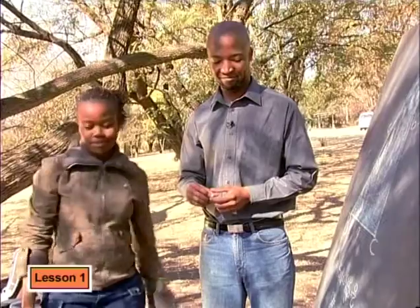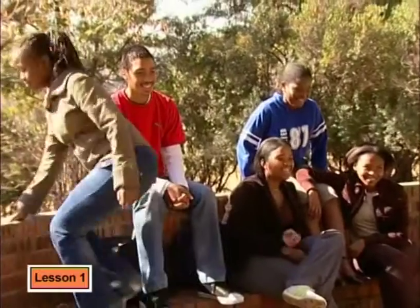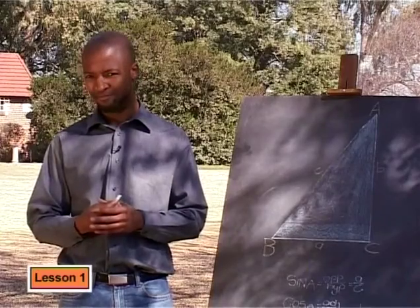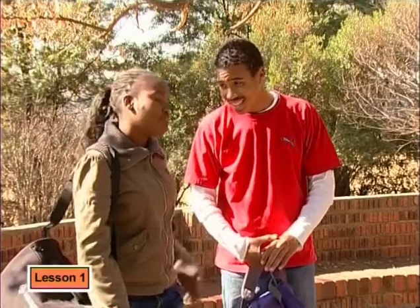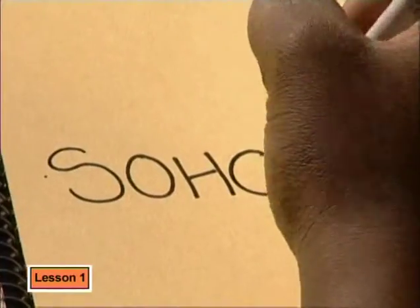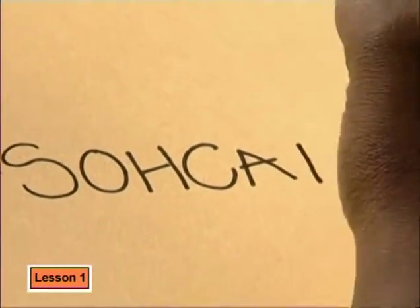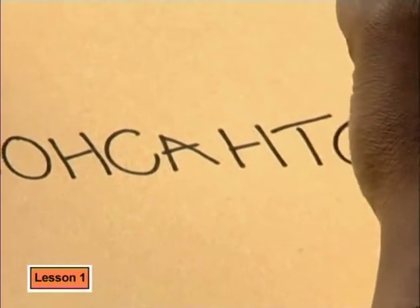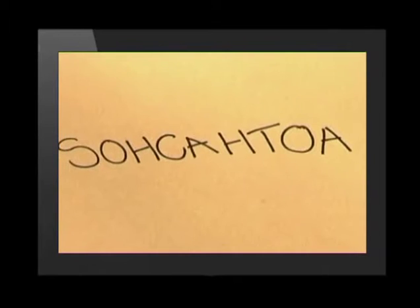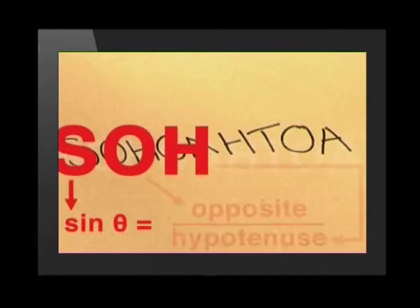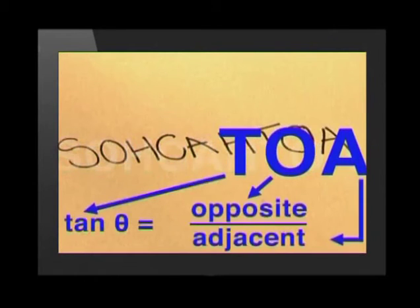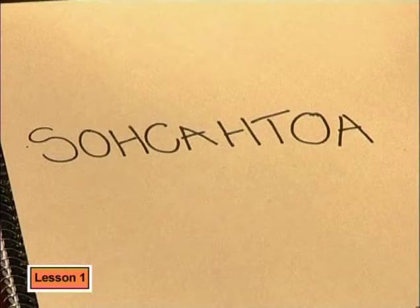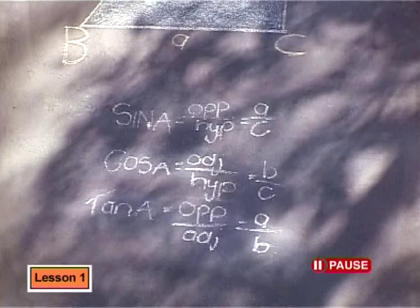How do you remember all of that? I just used SOHCAHTOA. I write it down like this. This is short for: Sine is Opposite divided by Hypotenuse; Cosine is Adjacent divided by Hypotenuse; and Tan is Opposite divided by Adjacent. These trig ratios are really important and you will use them all the time, so make a note of them.